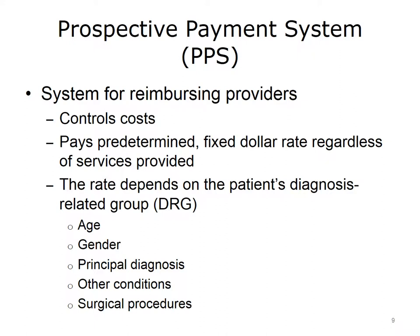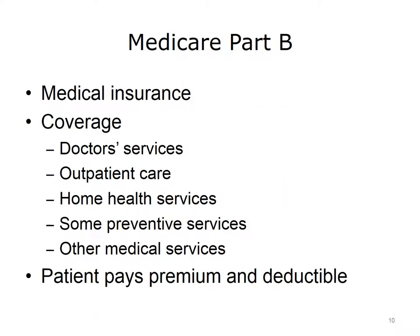Medicare Part B is medical insurance for physicians and other providers. It covers doctor's services, outpatient care, home health services, some preventive services, and certain other medical services. Patients are required to pay a monthly premium and annual deductible. The patient is responsible for 20% of the coinsurance for healthcare services after the annual deductible. Many individuals have employer-provided supplemental insurance that covers coinsurance expenses; in addition, private supplemental policies may be purchased individually.